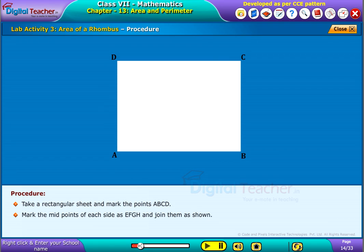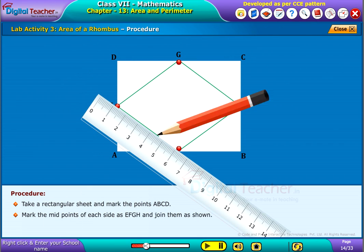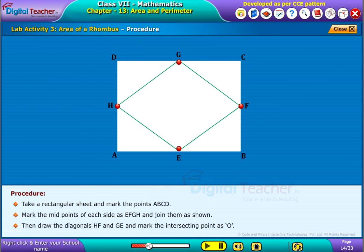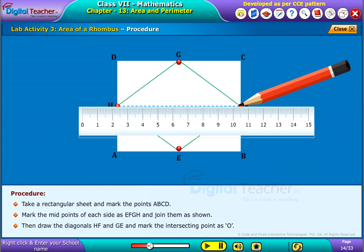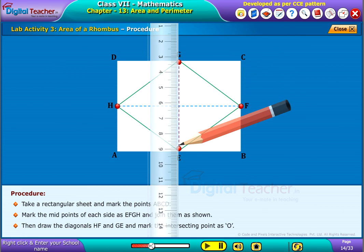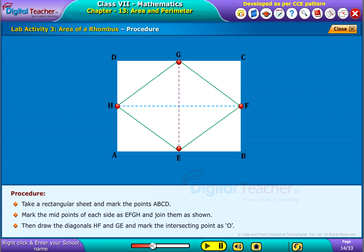Mark the midpoints of each side as E, F, G, H and join them as shown. Then draw the diagonals HF and GE and mark the intersecting point as O.